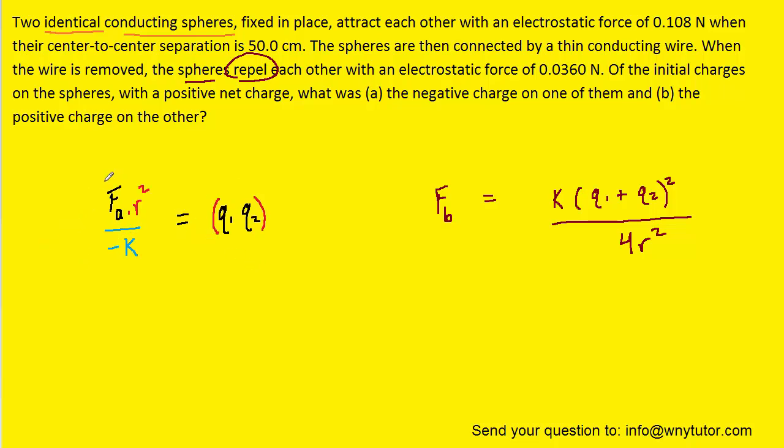Now, remember that fa was that original attractive force which had a value of 0.108 newtons. We know r is 0.5 meters. Notice we have to convert the 50 centimeters to 0.5 meters. And then k is a known value as well. So we're going to plug in and solve for the product of q1 and q2.